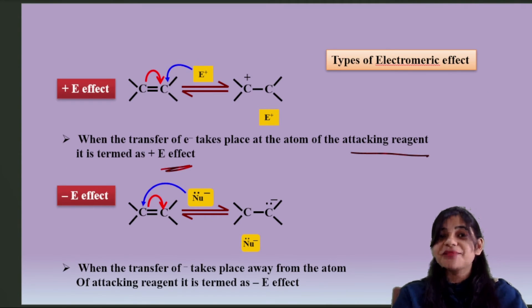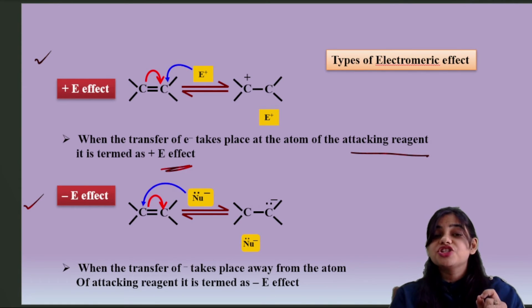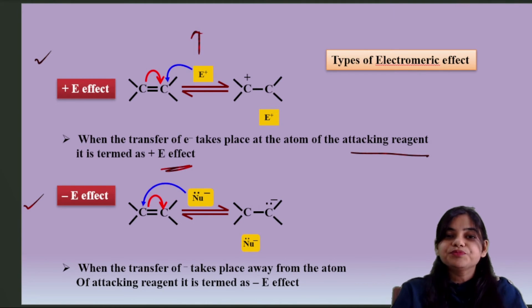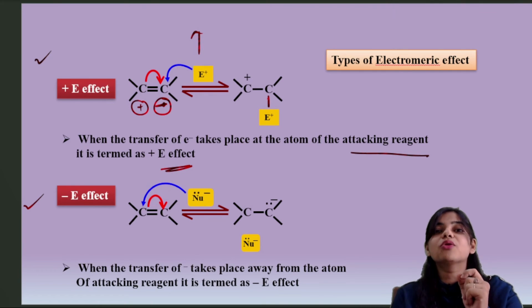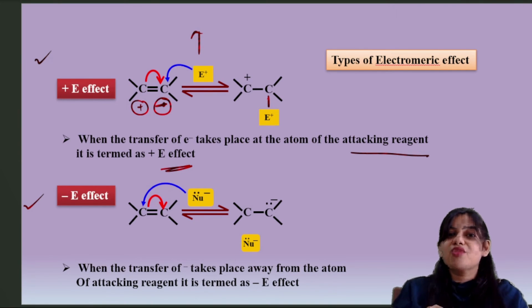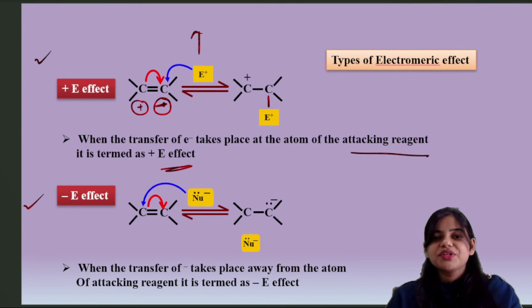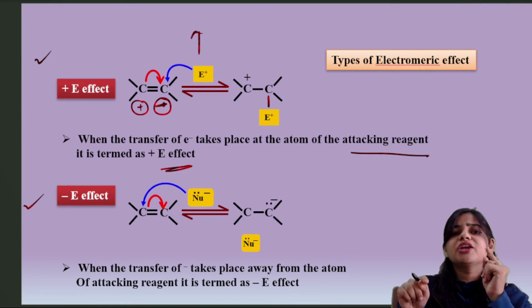Next, let's see what are the types of electromeric effect. Electromeric effect is of two types: positive and negative, and it is denoted by plus E and minus E. Plus E means positive electromeric effect. When the transfer of electrons takes place at the atom of the attacking reagent, the element which will receive electrons, where electrophile attacks, that is positive electromeric effect.